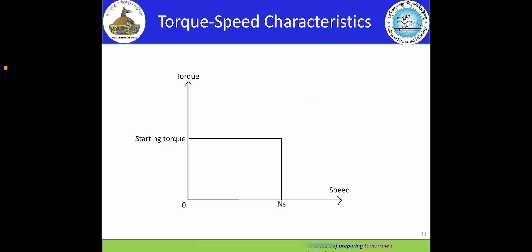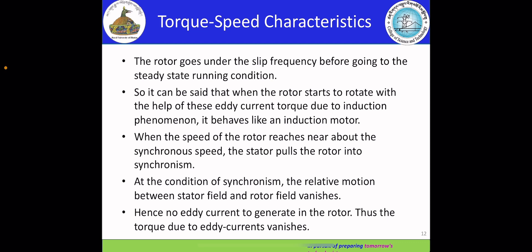Next, we have the torque-speed characteristics graph as shown below. We have a starting torque and then a synchronous speed. Before reaching the steady state running condition, the rotor goes through the slip frequency. When the rotor starts to rotate due to eddy current torque from the induction phenomenon, it behaves like an induction motor. When the rotor speed reaches near synchronous speed, the stator pulls the rotor into synchronism. At synchronism, the relative motion between stator field and rotor field vanishes, hence no eddy current is generated in the rotor, and the torque due to eddy current vanishes.